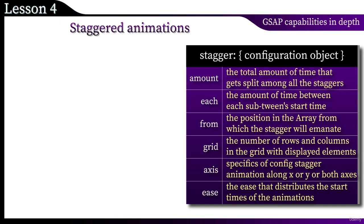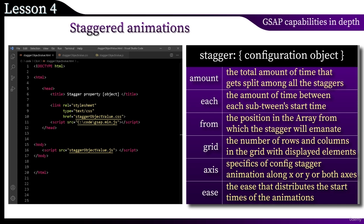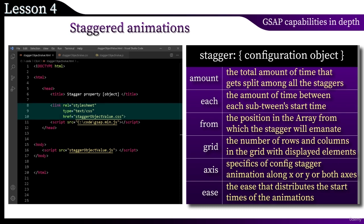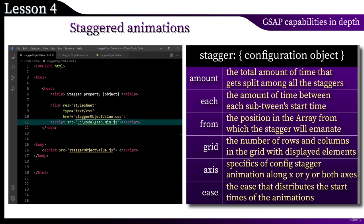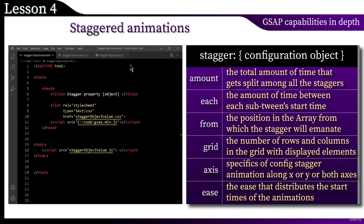Let's see what all this means in practice. Our example consists of three files — HTML, CSS, and JavaScript. There is a link to the stylesheet, the locally located GSAP library, and finally the script file, to create which we are moving on.